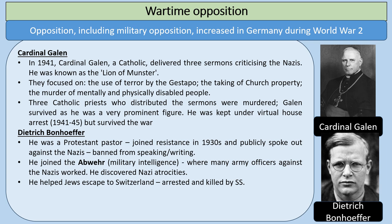Dietrich Bonhoeffer was a Protestant pastor who joined the resistance in the 1930s and publicly spoke out against the Nazis, and had been banned from speaking and writing. During the Second World War, he joined the Abwehr — the Military Intelligence Group — where many army officers against the Nazis worked. He discovered Nazi atrocities, particularly against Jewish people, and one way he resisted was helping Jewish people escape to Switzerland. Sadly and tragically, he was arrested and killed by the SS.